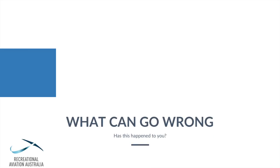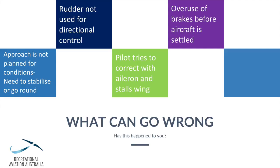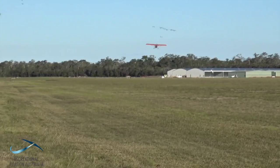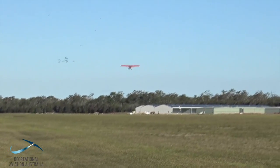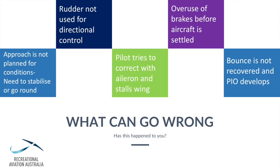An approach that is not planned or cannot be effectively planned for conditions will result in an unstable approach. You need to stabilise the approach, and if it goes wrong, it's okay — just apply power, adopt the correct climbing attitude, reconfigure the aircraft, and go around. This gives you the opportunity to recognise the conditions and set up your next approach differently.